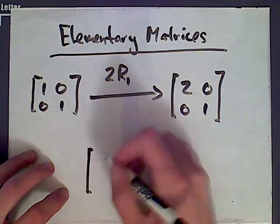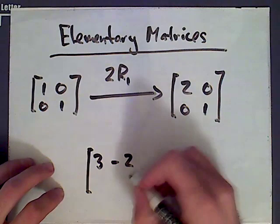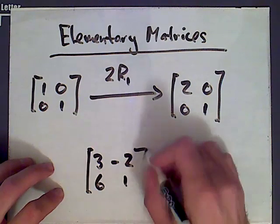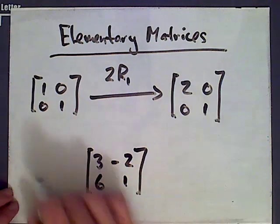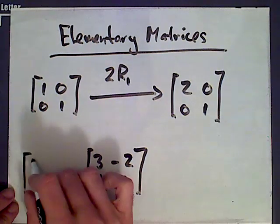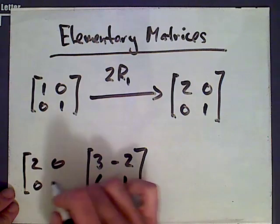Now what we can do is perform the same operation on any matrix by multiplying by the corresponding elementary matrix on the left. We have 2, 0, 0, 1.